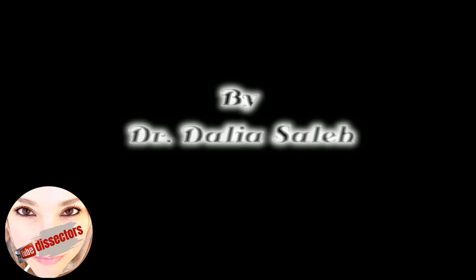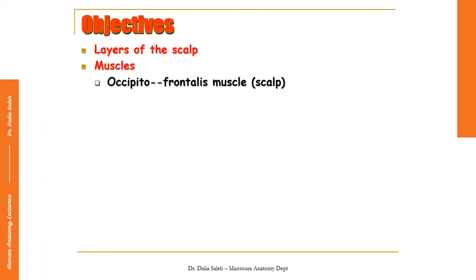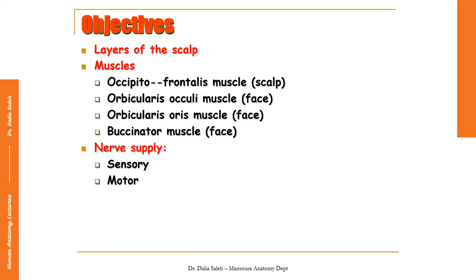To carry on with the lectures of the head and neck course, I'm going to discuss in this presentation the blood supply of the scalp and face. I'm Dr. Dalia Saleh, professor and head of the anatomy department at Mansoura University, Egypt. We have already discussed in two presentations the layers of the scalp, the muscles including the occipitofrontalis muscle, the orbicularis oculi, the orbicularis oris, and the buccinator muscle. In another presentation I talked about the nervous supply of the scalp and face, including their sensory and motor nerve supply.